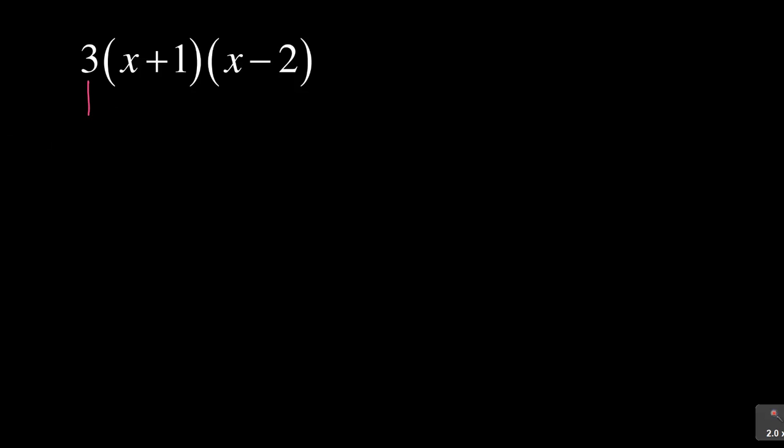First things first, look at the 3. The 3 is affecting everything inside, and the two brackets are also affecting each other. So you've got the 3 and the two brackets. Let's start with the brackets: you've got (x+1) and (x-2). Start with the brackets.